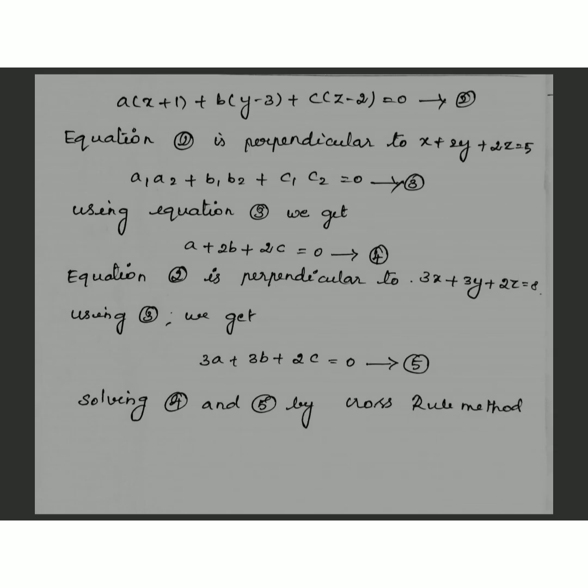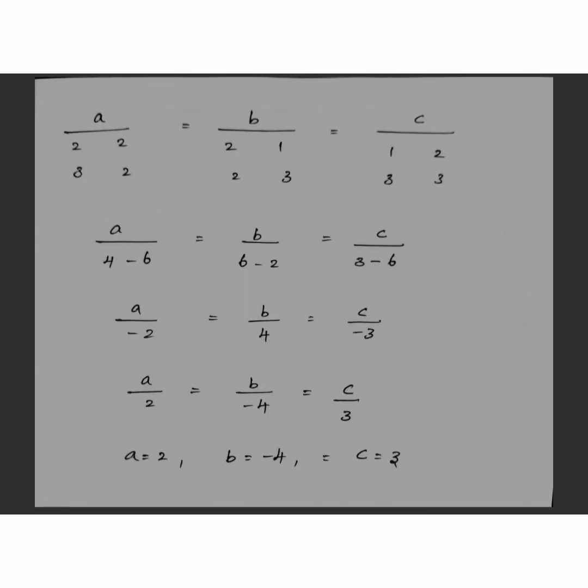Now we solve equations 4 and 5 using the cross rule method to find a, b, and c. Taking the coefficients of a, b, c and applying the cross rule, we get a = 2, b = −4, and c = 3.